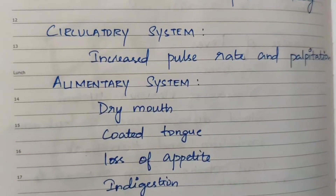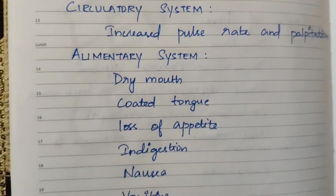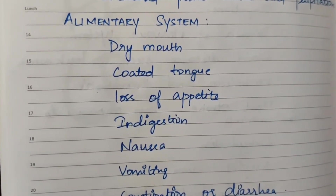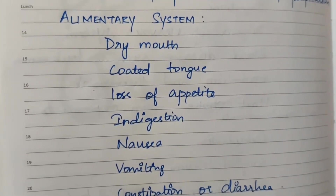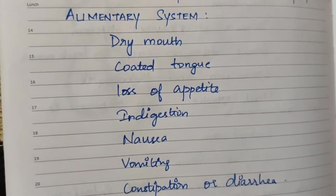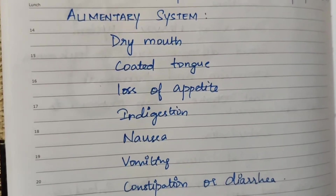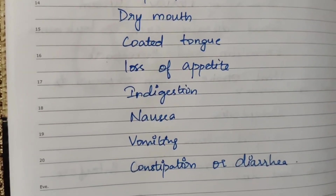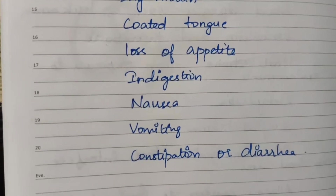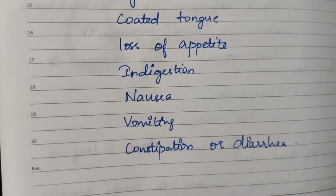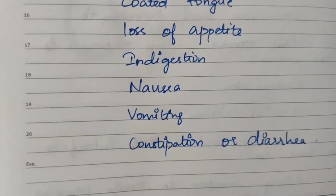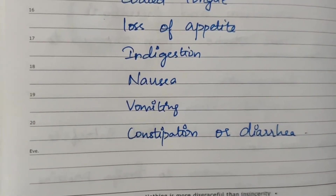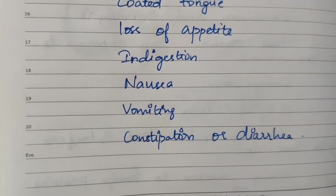Palpitation may also occur. In the gastrointestinal system, symptoms include dry mouth, dehydration, coated tongue, loss of appetite, nausea, vomiting, constipation, and diarrhea.